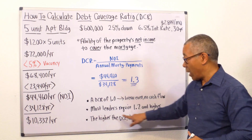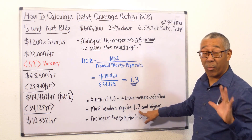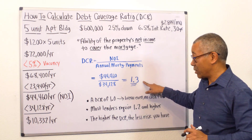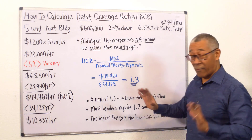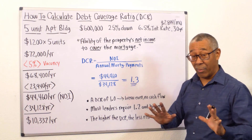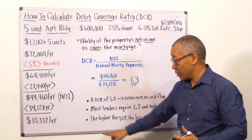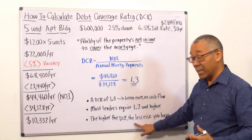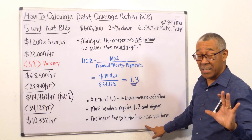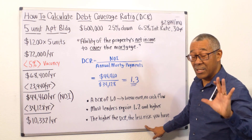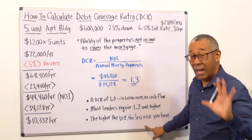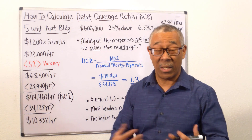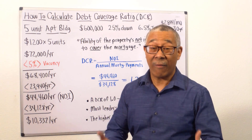Most lenders require you to be at least 1.2 and higher. From a lender's standpoint — and this is true from your standpoint too — the higher the DCR, the less risky it is, because the higher the DCR, the more cash flow you have, and the lender looks at this as being a safer deal.